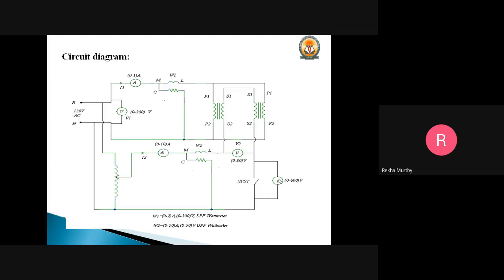If the voltmeter indicates zero reading, then the SPST switch is closed and we can conduct the experiment. If the voltmeter indicates twice the secondary voltage, then the secondary terminals of any one of the transformers will be interchanged to make the voltmeter read zero. Then only the SPST switch is closed. We must ensure this voltmeter reads zero when the SPST switch is open. If it reads twice the value, we must switch off the supply and interchange the connections of the secondary windings.